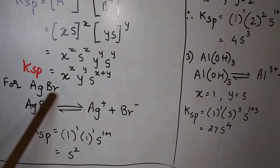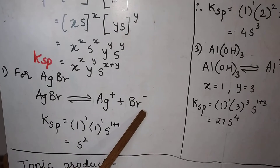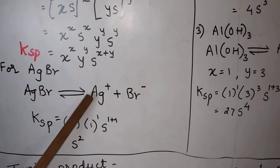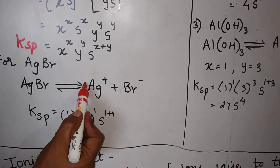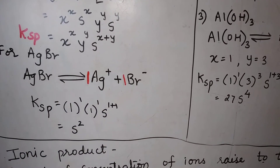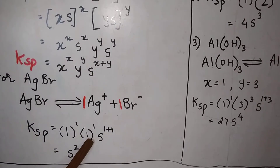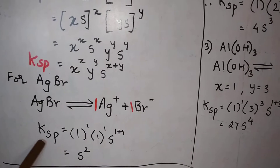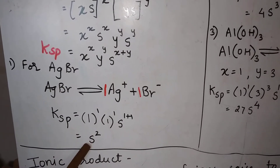Let's try an example. For HgBr — a sparingly soluble salt — it ionizes at equilibrium to give Ag+ and Br−. Here X = 1 and Y = 1. So KSP = 1^1 · 1^1 · S^(1+1) = S squared. For HgBr, KSP = S².